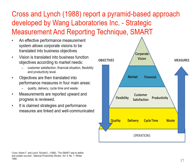Cross and Lynch report a pyramid-based approach developed in Wang Laboratories called the Strategic Measurement and Reporting Technique, SMART. An effective performance measurement system allows corporate vision to be translated into business objectives — vision translated into business function objectives according to market needs, which flows down to customer satisfaction, then to quality, delivery, cycle times and waste, all the way down to operations. Measurements are reported upward, objectives translated downward. Strategies and performance measures are claimed to be linked and well communicated. However, this is very top-down, provides masses of layers between corporate vision and operations, and I think that's a terrible way to run an organisation.